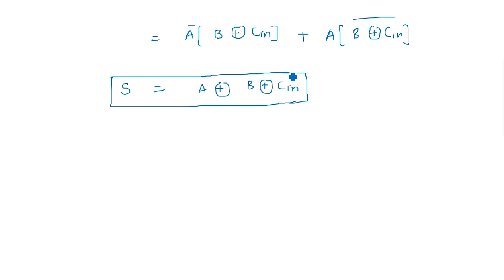Therefore the sum expression for the full adder is S = A XOR B XOR Cin. That means we are having one XOR operation with three inputs. Now we move on to derive the expression for Carry Out.